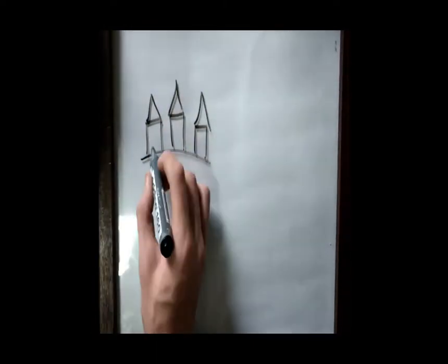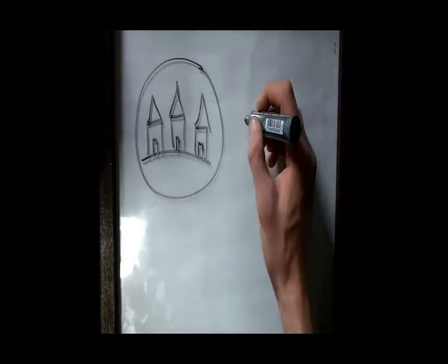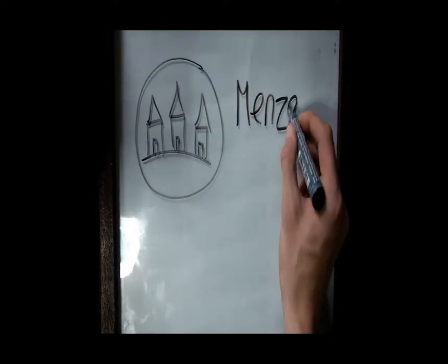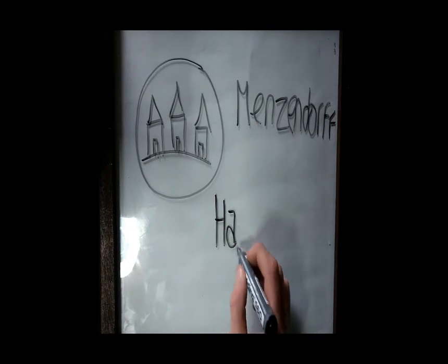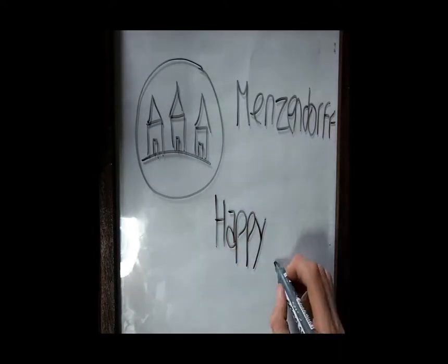Werner is six years old when his parents take over the lease in Menzendorf, a small manor in the principality of Radzebulk. Werner later writes that those were happy years.